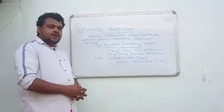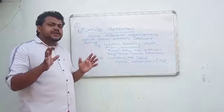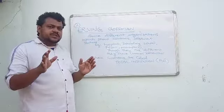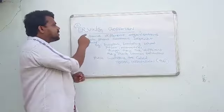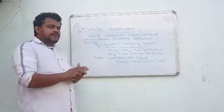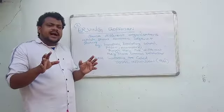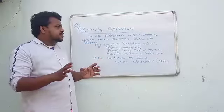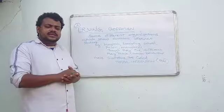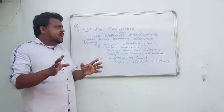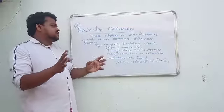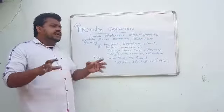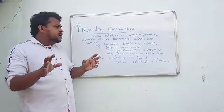Now, let us discuss the third perspectives on organization. This perspective is put forward by Irving Goffman. Irving Goffman conducted a study on some of the organizations and he found that there are some institutions, there are some organizations. Though they are different in nature, they share the common behavior.